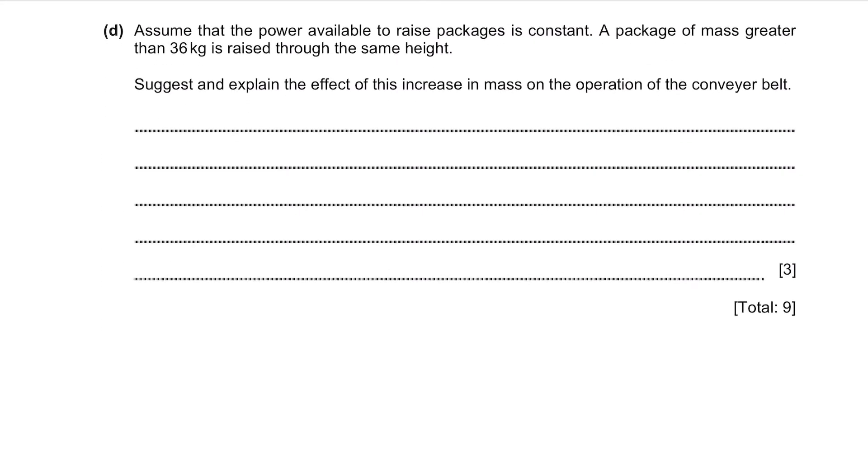Part D. Assume that the power available to raise packages is constant. A package of mass greater than 36kg is raised through the same height. Suggest and explain the effect of this increase in mass on the operation of the conveyor belt. Since the mass is increased, the gravitational potential energy needed will be increased. Since energy equals power divided by time and power stays constant while energy is increased, time will be increased. The final effect will be time taken longer to transport the package.